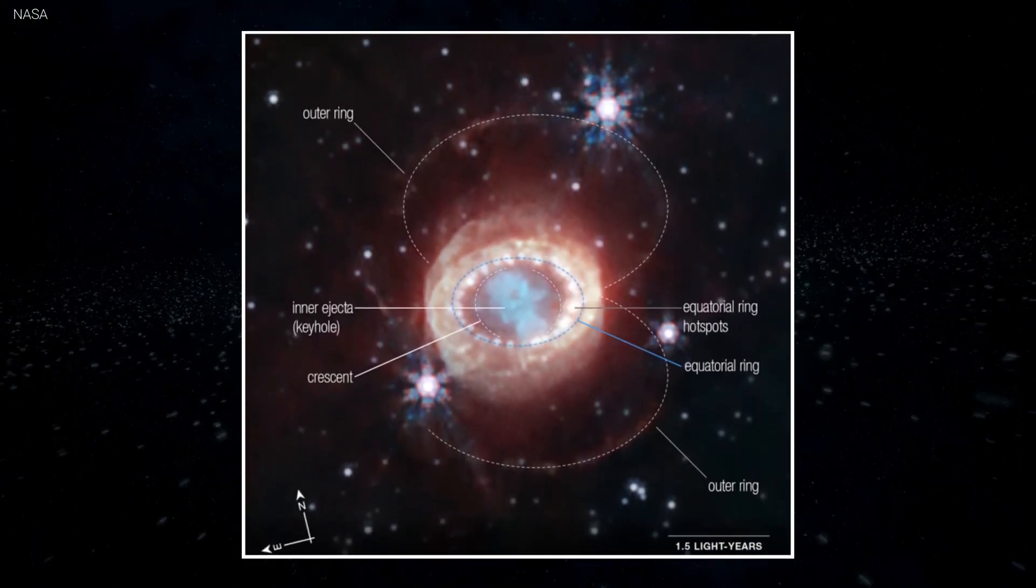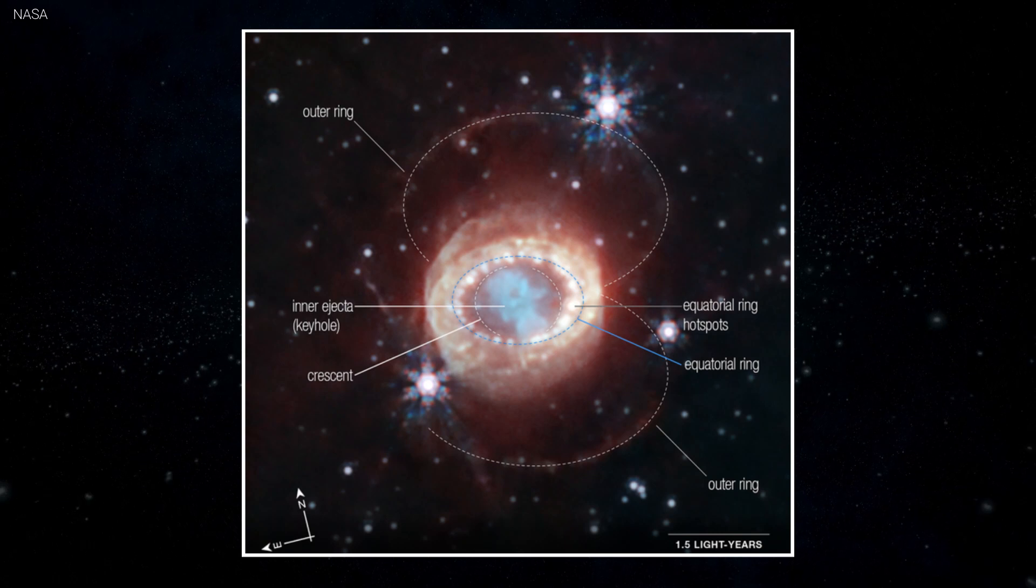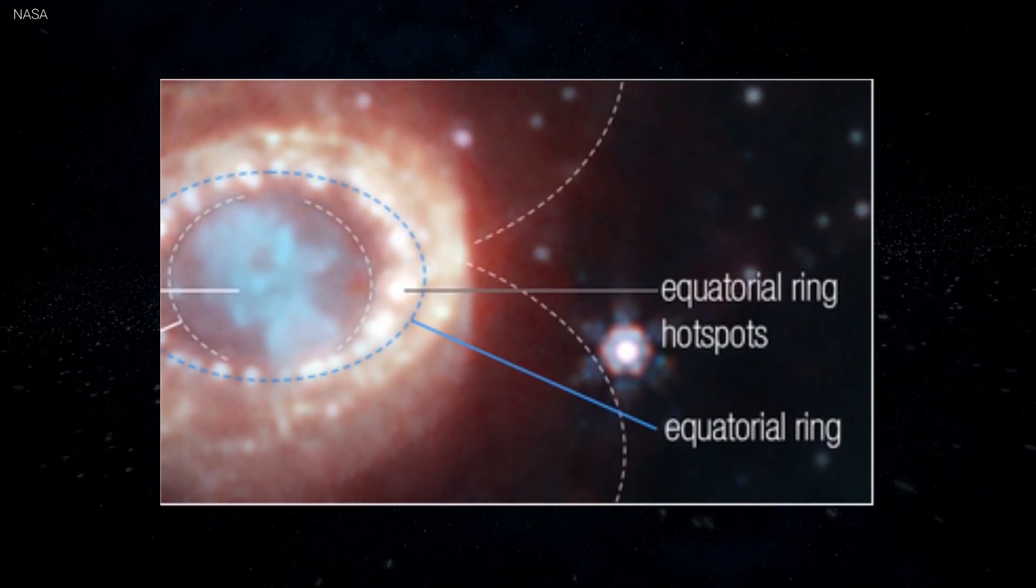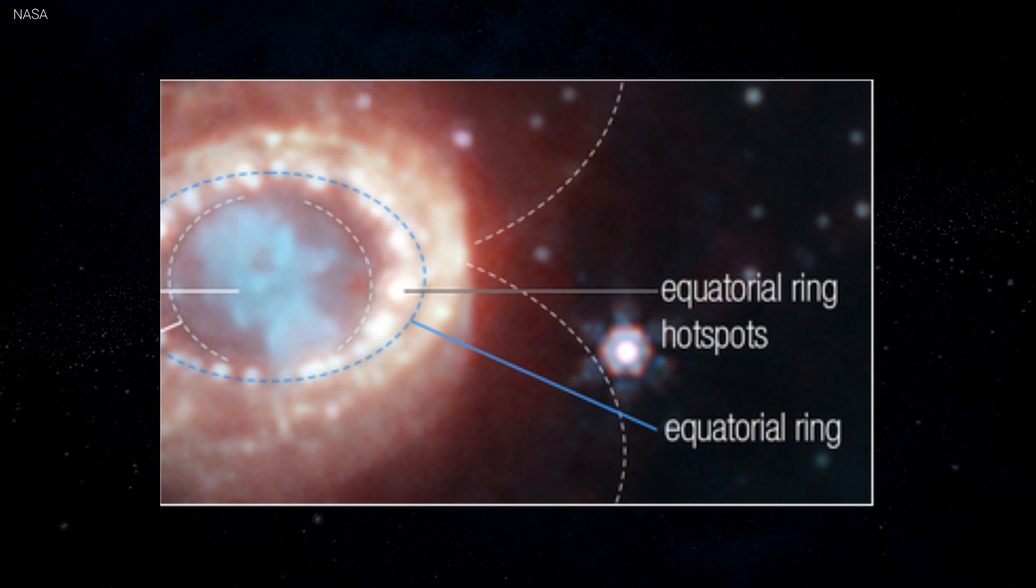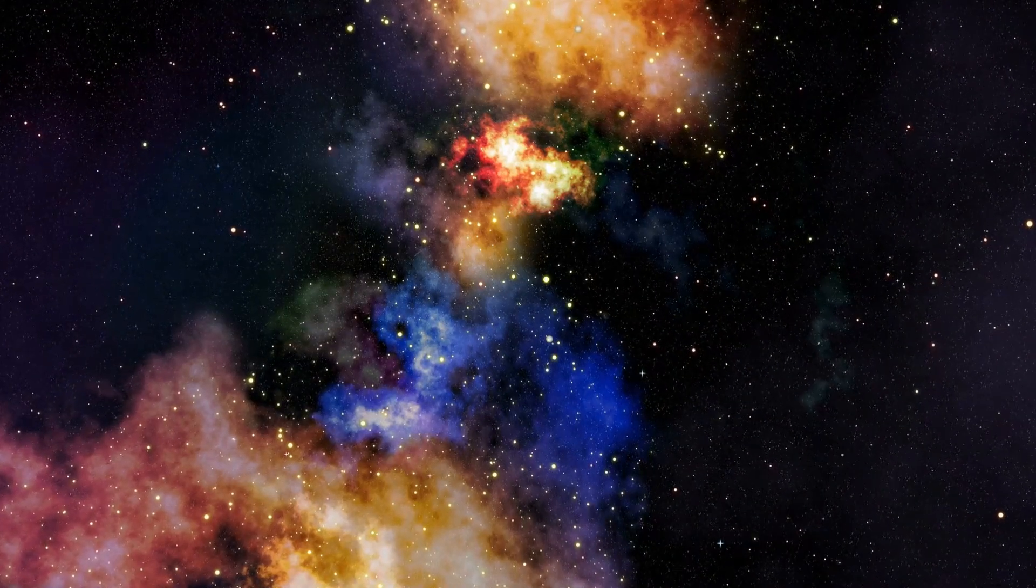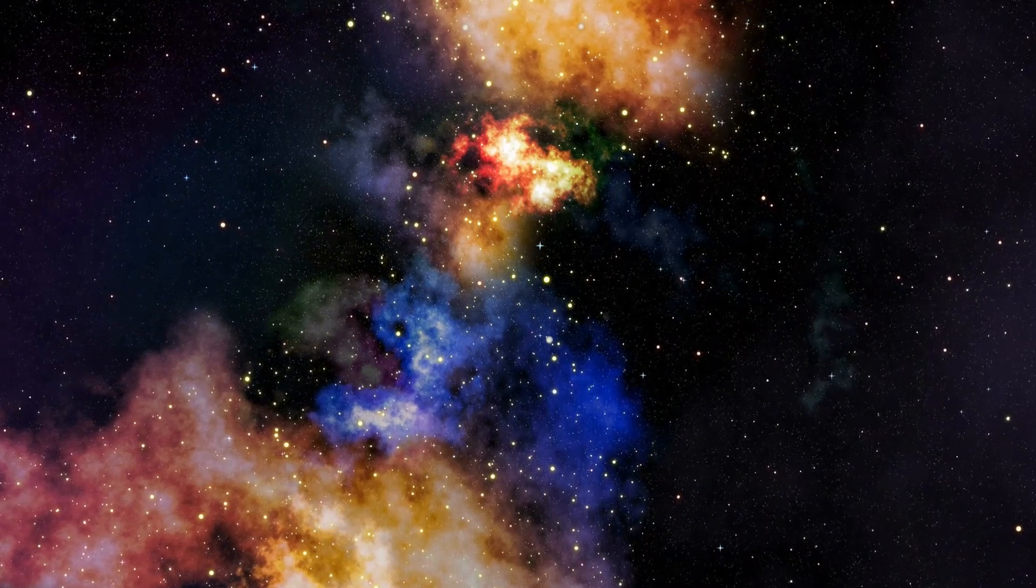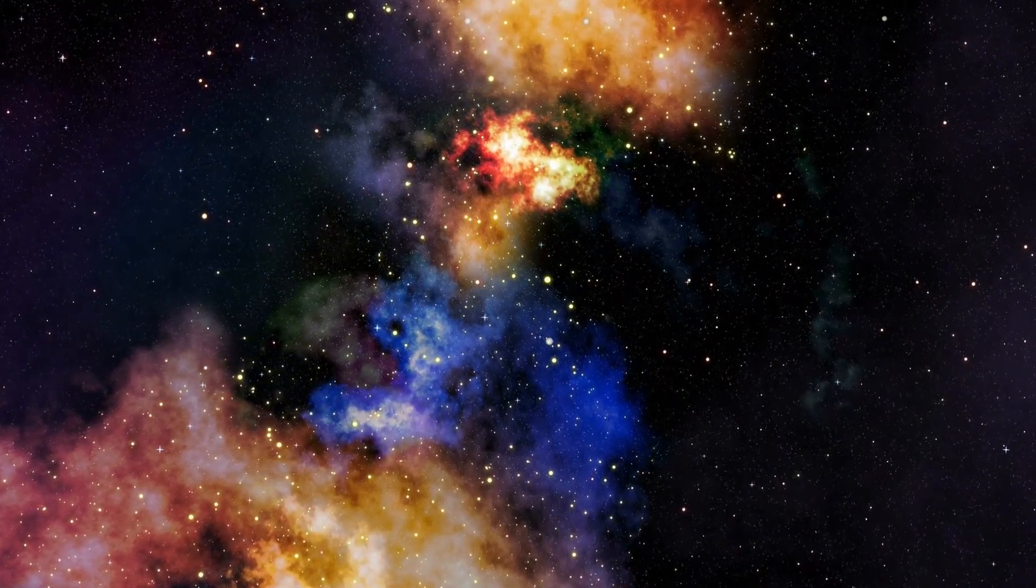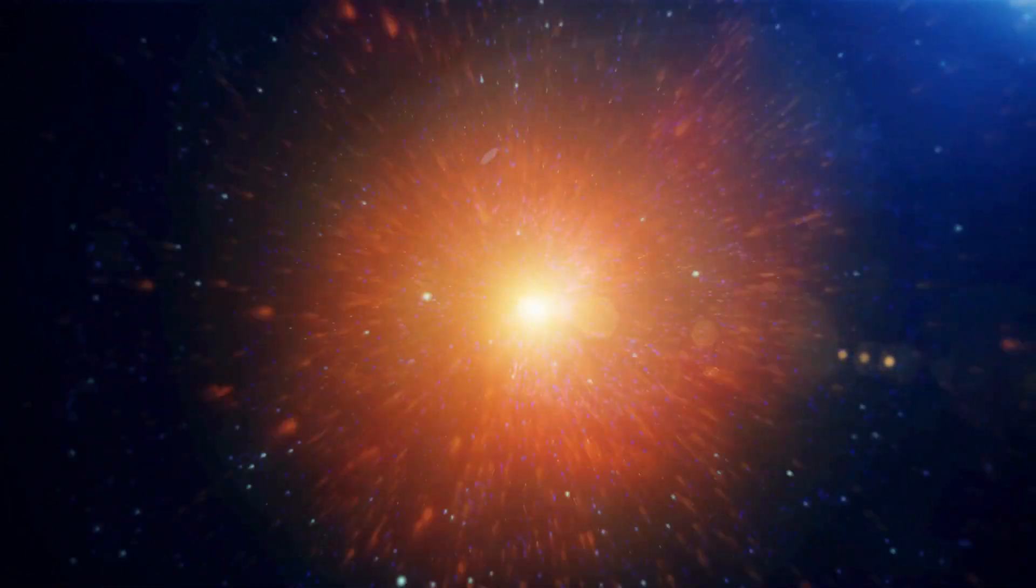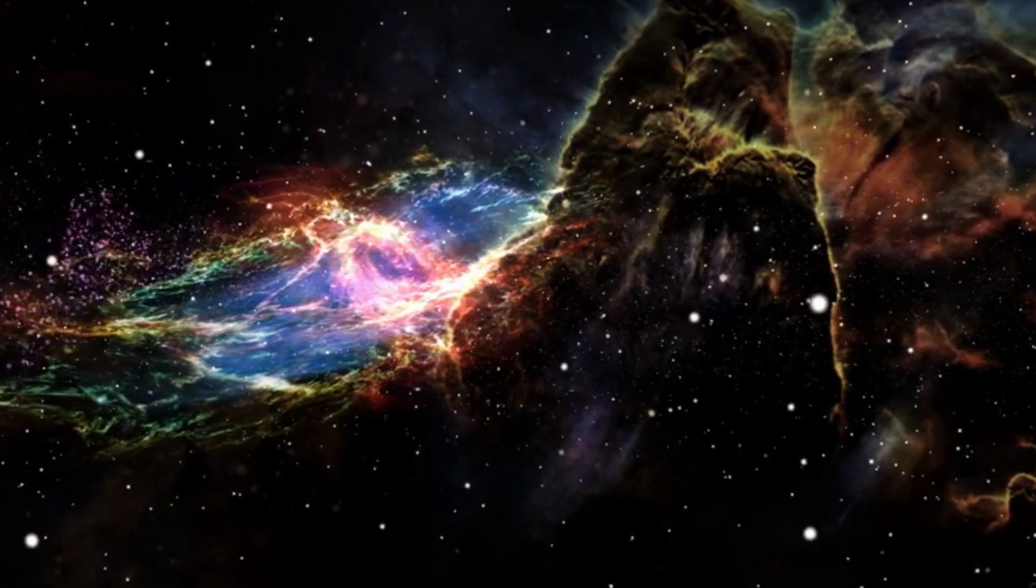It's surrounded by a luminous ring and two hourglass-shaped outer rings. The equatorial ring is composed of material ejected by the star millennia before its explosive end. The ring boasts brilliant hot spots—fiery points of light formed when the shock wave from the supernova's explosion collides with the ring's material, akin to a celestial fireworks display. The universe has a way of dazzling us even in its most violent moments.